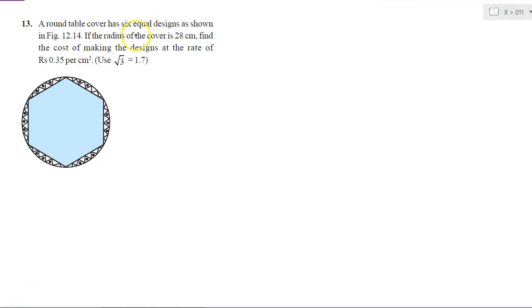A round table cover has 6 equal designs as shown in this figure. If the radius of the cover is 28 cm, so I'll call this as R, 28 cm, find the cost of making the designs at the rate of Rs 0.35 per cm², which is 35 paisa per cm².